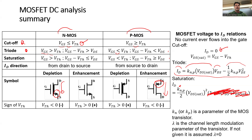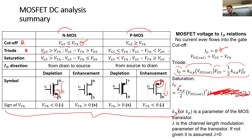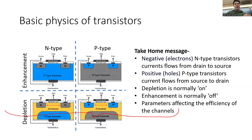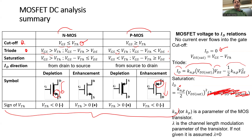What else did I want to say about DC analysis and MOSFETs? At this point, this should be a little bit difficult to understand. Today I'm mainly going to give you a phenomenological description of these devices — why physically these three regions exist and why this device behaves in such a weird fashion. Do note that ultimately you are responsible for solving circuits, so I would devote the majority of my time trying to understand: if I have a circuit with one of these things, how do I solve it?